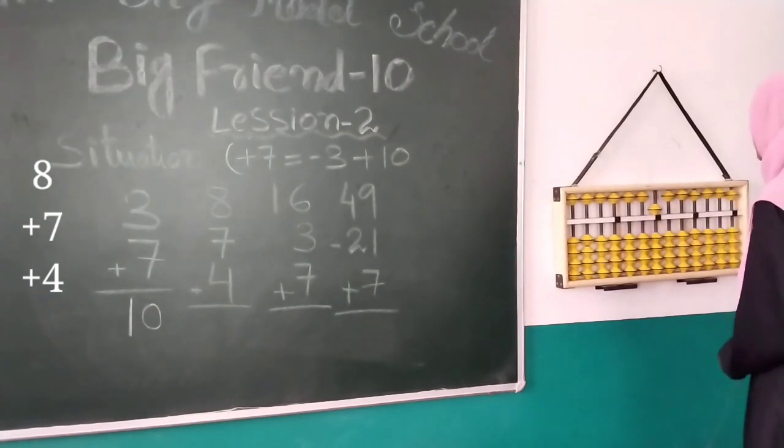And our next question is 8 plus 7 plus 4. Same process. 8 with pinch, plus 7 karne ke liye humein 7 ke best friend 3 se minus karenge. Big Friend time aaya. And then 4 with thumb is direct. So the answer is 19.